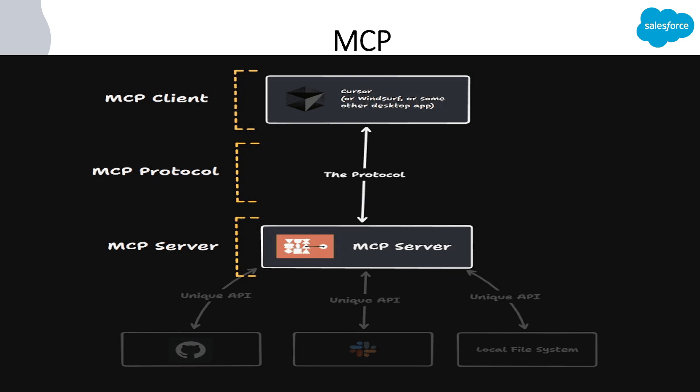These AI agents could be chatbots — for example, Salesforce agents, or ChatGPT, or Claude agent — or they can be code assistants. In Cursor we have a code assistant, and in VS Code using GitHub Copilot we can access this code assistant. So MCP is like a bridge between these AI agents and external data sources, for example, databases, APIs, or local files.